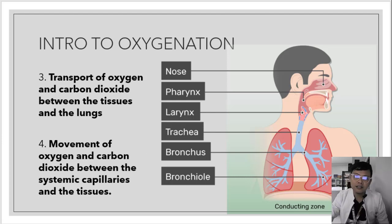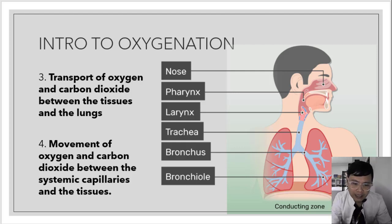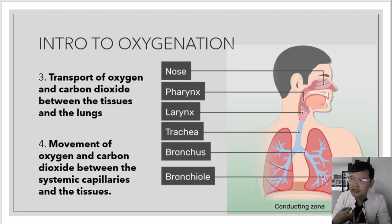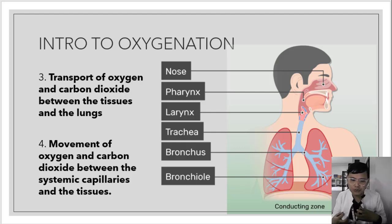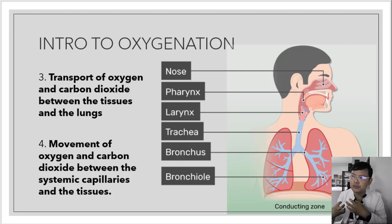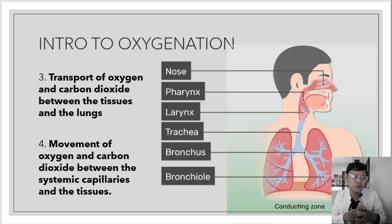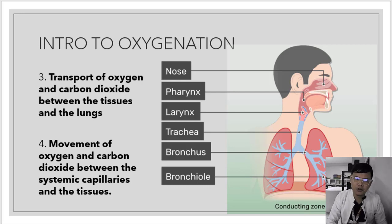The third component is the transport of oxygen and carbon dioxide between the tissues and the lungs. Oxygen goes inside the cell and is delivered to different tissues with the help of hemoglobin — at this point called oxyhemoglobin. The hemoglobin carries oxygenated blood to different parts of the body, then picks up carbon dioxide produced by the cells, and that carbon dioxide travels back to the alveoli to be expelled.